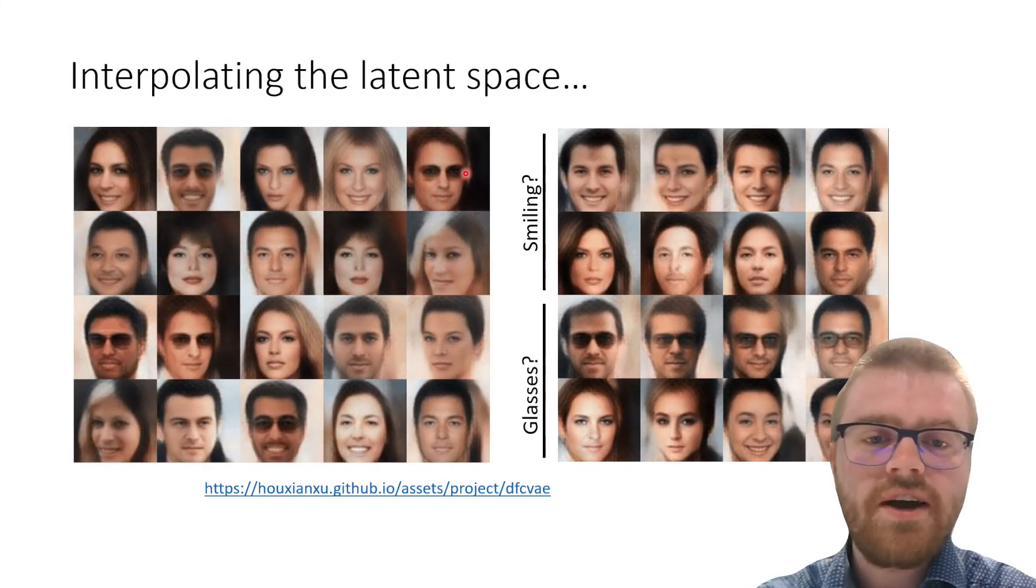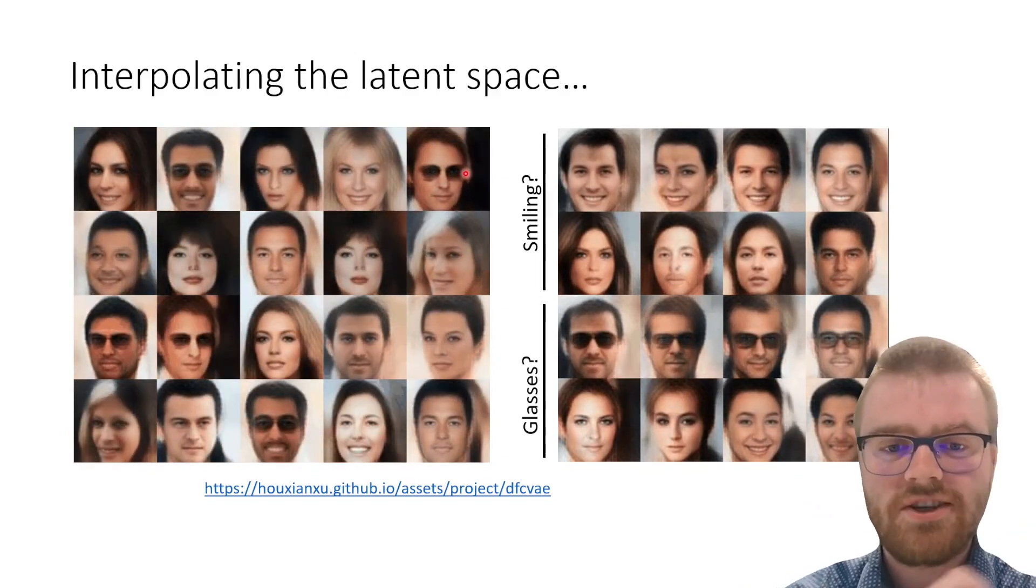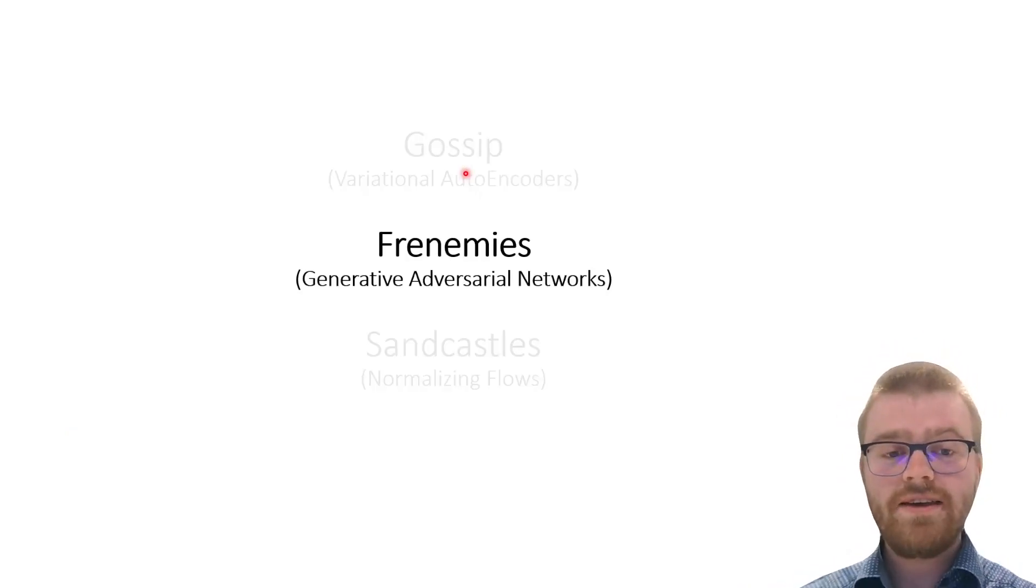We can even try to find on which axes are certain parameters in the latent space, like smiling or glasses. So that were VAEs, and in the next part we will be dealing with generative adversarial networks.